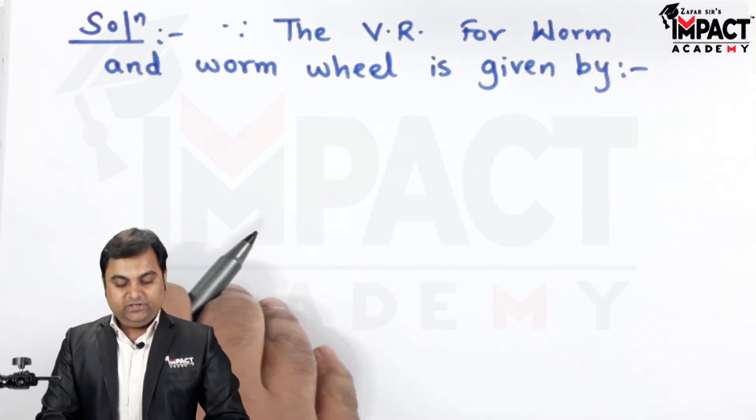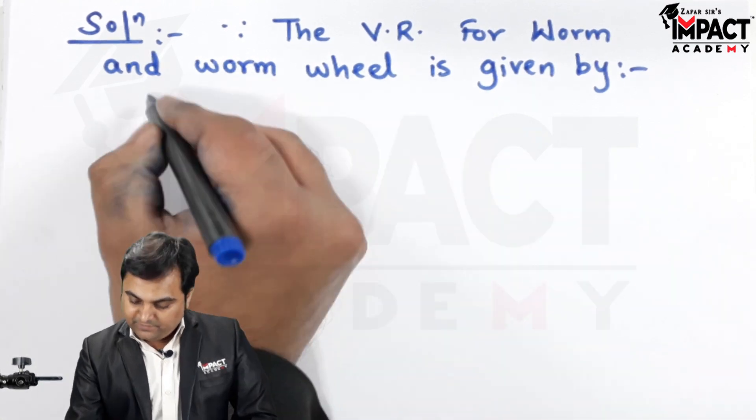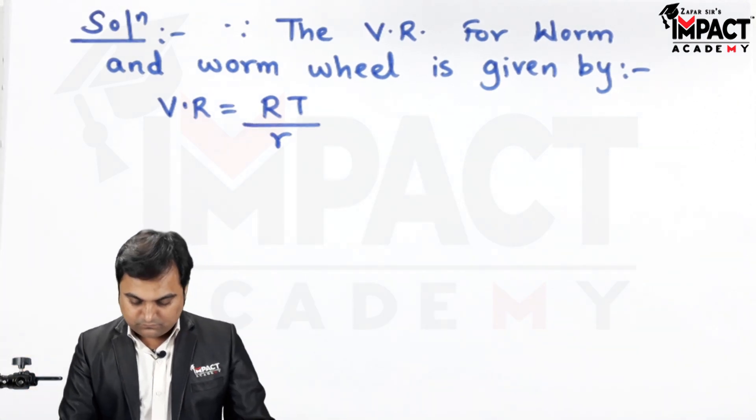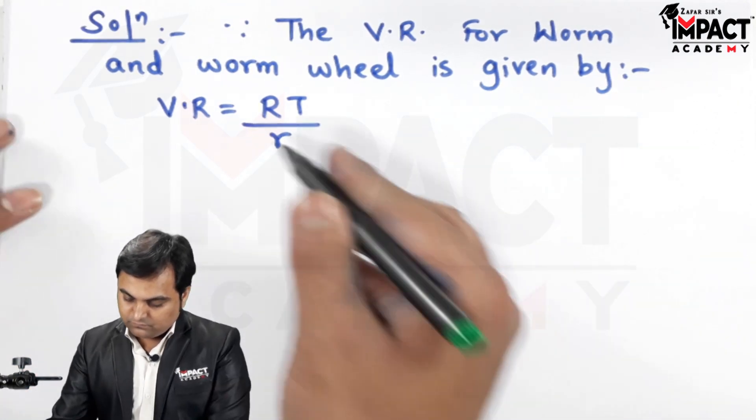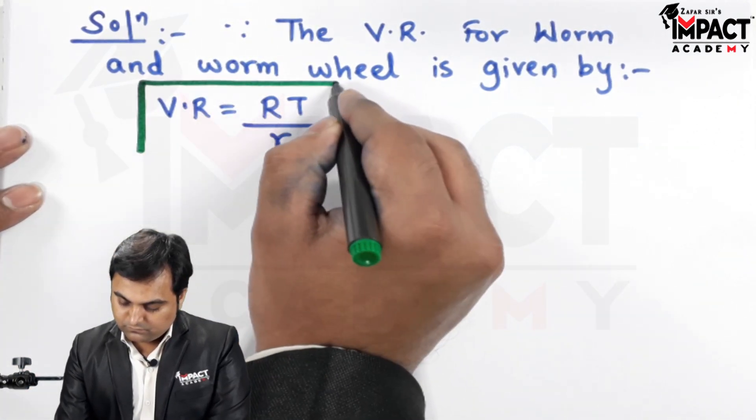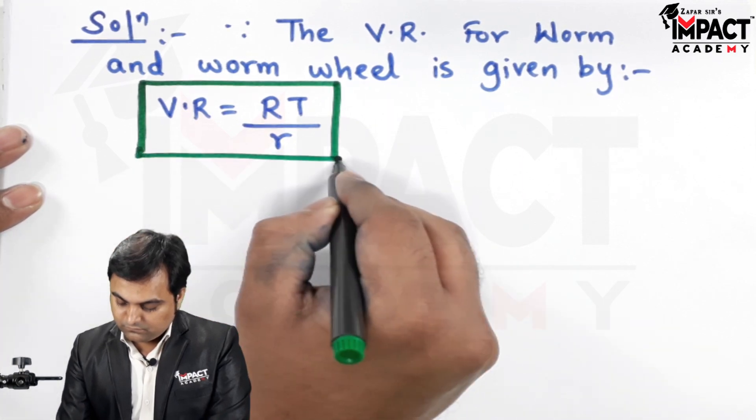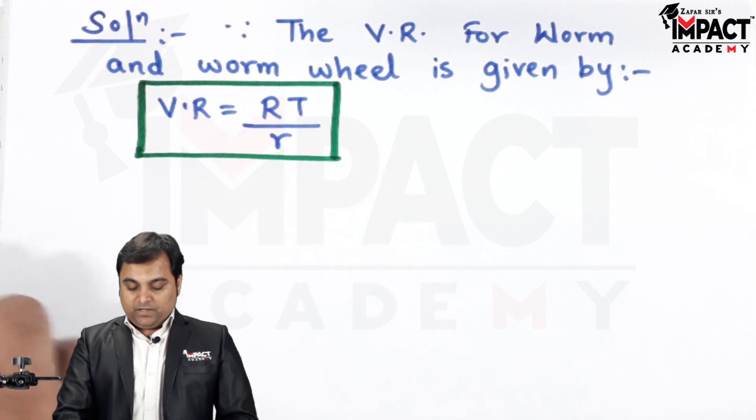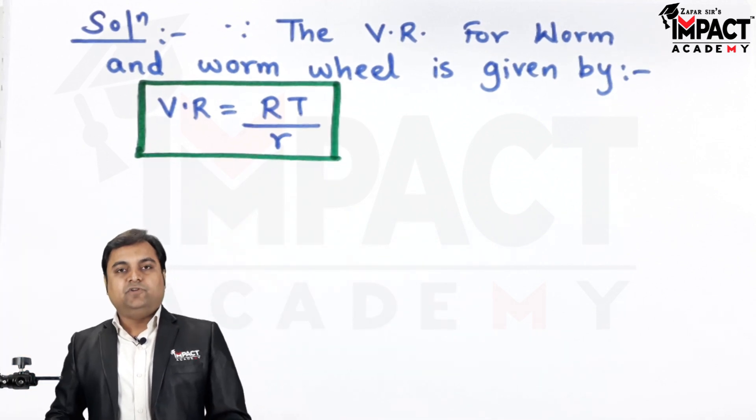Since the velocity ratio for the worm and worm wheel is given by the formula, it is capital R into capital T divided by small r.